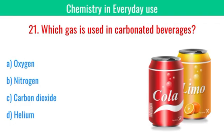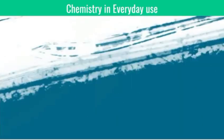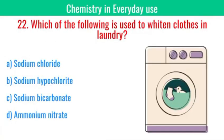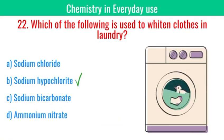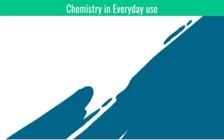Which gas is used in carbonated beverages? The correct answer is carbon dioxide. Which of the following is used to whiten clothes in laundry? The correct answer is sodium hypochlorite.